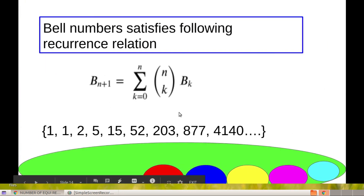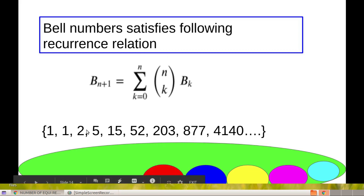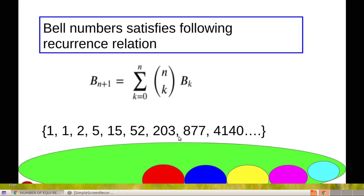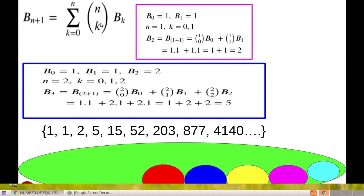Bell numbers can also be defined using the recurrence relation: B(n+1) = Σ(k=0 to n) C(n,k) · B(k). Using this relation, starting with B0 = 1 and B1 = 1, when n = 1 we get B2 = Σ(k=0 to 1) C(1,k)·B(k) = C(1,0)·B(0) + C(1,1)·B(1) = 1·1 + 1·1 = 2.